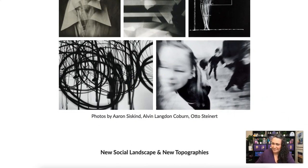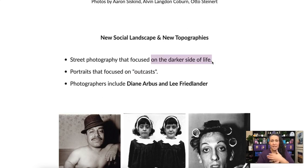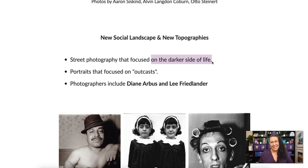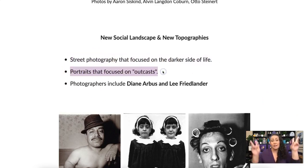The New Social Landscape and New Topographies were street photography that focused on the darker side of life. It was a push against the 1950s idea of the American dream — the perfect life seen in magazines where the woman always looks perfect, has a perfectly clean house, happy children, and dinner ready on the table. That idealized life just wasn't completely true. These photographers pushed to show what was really going on, using portraits of outcasts and street photography focused on darker realities.